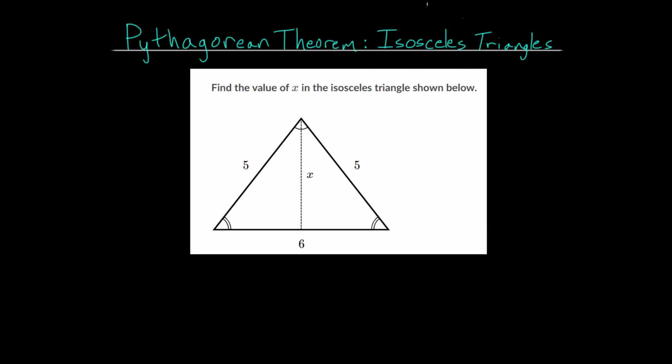So remember, an isosceles triangle has two sides that are equal, and also two angles that are equal.